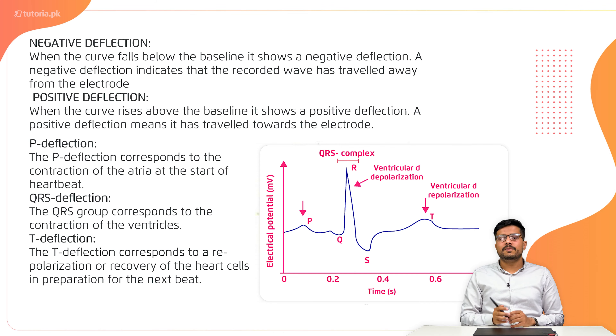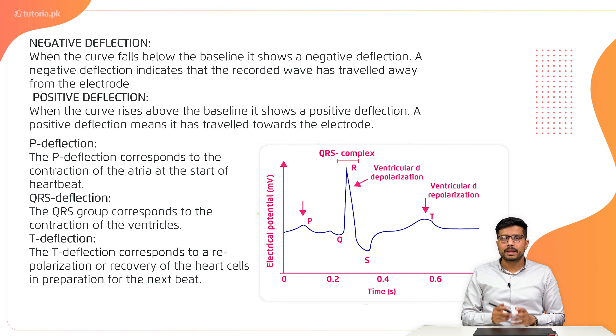To summarize: you have to explain the ECG and define the working principle, then explain negative and positive deflection, and finally explain the P, QRS, and T deflection.